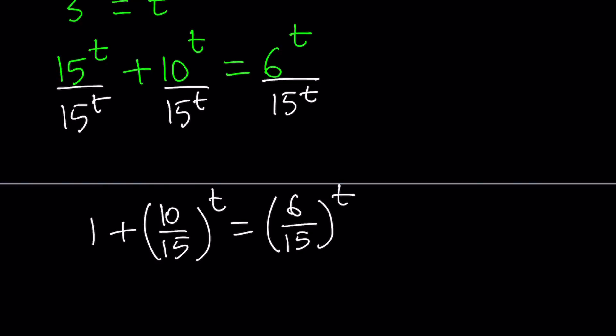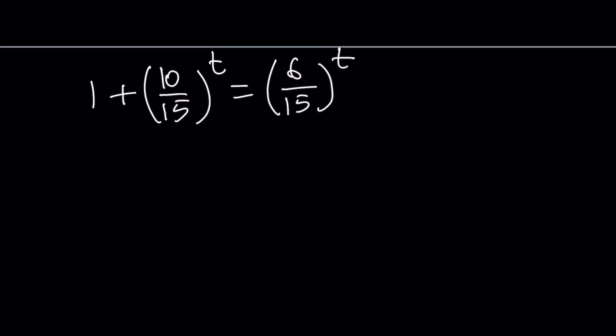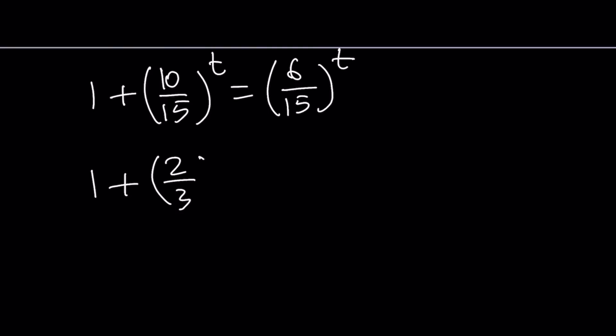Both of these fractions can be simplified. And that's what is so special about these numbers because they have a common factor. 10 over 15, if you divide by 5, can be written as 2 over 3 to the power t. And 6 over 15 can be written as 2 over 5 after division by 3. Obviously, this equation is simpler than the previous one.